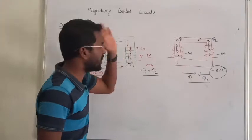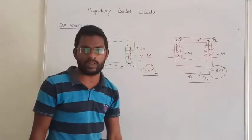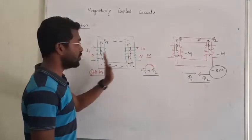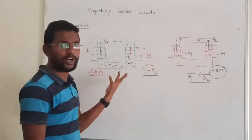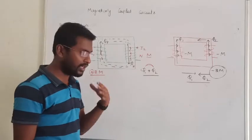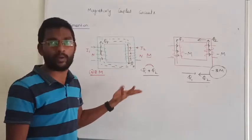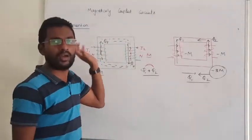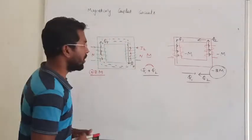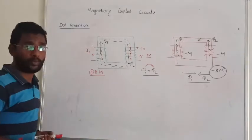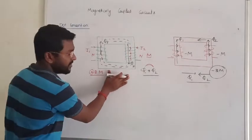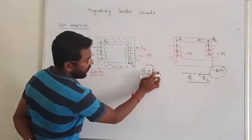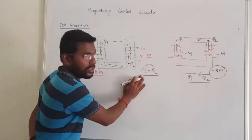Using the dot convention, we just observe whether the mutual inductance is positive or negative — that's all. If you want to determine that, just look at the dot convention. In the first case, fluxes are adding each other. So the current entering point is where we place the dot.